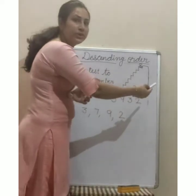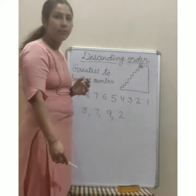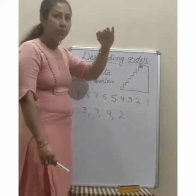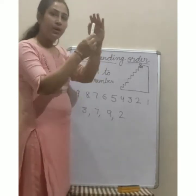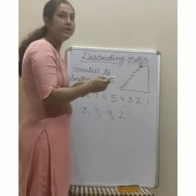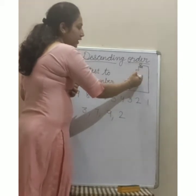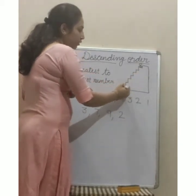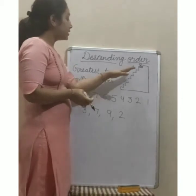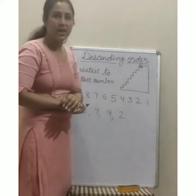देखो, look at this picture। इसमें एक boy है जो top पे खड़ा है। जैसे आप stair चढ़कर ऊपर जाते हो, तो आप top पे होते हो। अब वापिस नीचे आना है — down, down, down होकर नीचे पहुंच जाएगा। ठीक है? इसी तरह numbers में भी greatest to smallest जाना है।